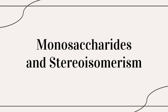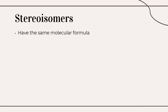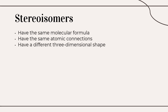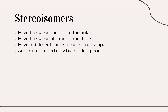Today, we are going to learn about monosaccharides and stereoisomerism. Stereoisomers are those molecules having the same molecular formula. They have the same atomic connections, they have a different three-dimensional shape, and are interchanged only by breaking bonds. There is more to understanding the structure of a monosaccharide than knowing the number of carbon atoms it has and whether it is an aldehyde or keto. We must also identify which particular stereoisomer is present.